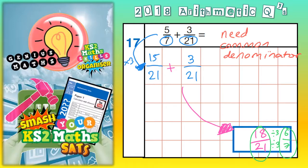You could have actually simplified the 3/21 first. Both of those were in the 3 times table, so divide by 3. 3 divided by 3 is 1, 21 divided by 3 is 7. So you're basically dealing with 5/7 and 1/7, which gives you 6/7 here.